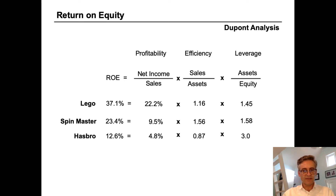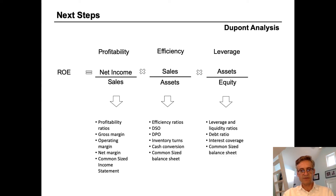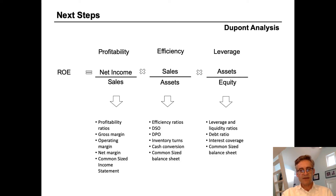So where do we go from here? Now we know what the issues are. If we have an issue with profitability, we'd want to look at gross margin, operating margin, and net margin, and use a common size income statement. If the problem is efficiency, we'd examine days sales outstanding, days payable outstanding, inventory turns, cash conversion cycle, and a common size balance sheet. And if the problem is leverage, we'd look at the debt ratio, interest coverage, and a common size balance sheet. The DuPont framework is a nice way to structure our analysis of a company.